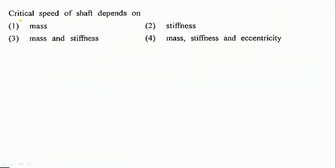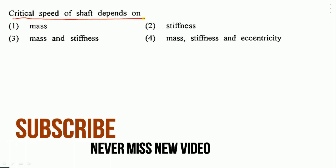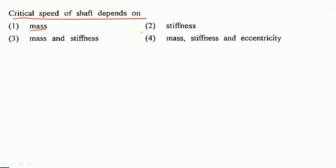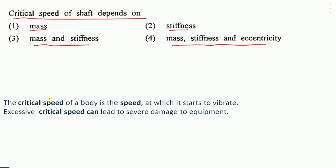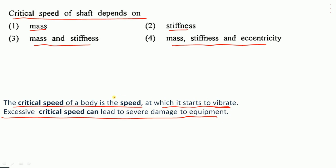Critical speed of a shaft depends on: mass, stiffness, mass and stiffness, or mass, stiffness and eccentricity? The critical speed is the speed at which the shaft starts to vibrate excessively, and excessive critical speed can lead to damage to the equipment. It is dependent on the mass and stiffness of the body. So option 3 — mass and stiffness — is the correct option.